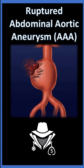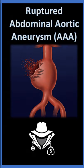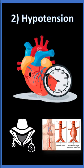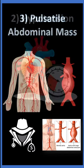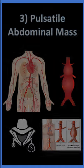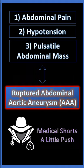We have a classical triad to rapidly identify ruptured abdominal aortic aneurysm. First, abdominal pain. Second, hypotension, as a result of the enormous blood loss. Third, on examination, you can find a pulsatile abdominal mass. This is the clinical triad of ruptured abdominal aortic aneurysm.